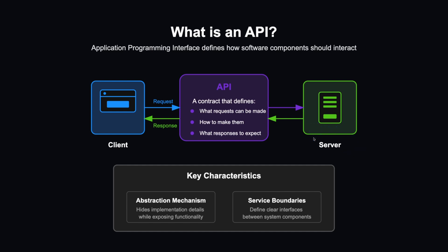An API is a contract that defines the terms of what requests can be made. It provides an interface on how to make these requests — what endpoints we have, what methods can we use, and what responses we can expect from the server for a specific endpoint.